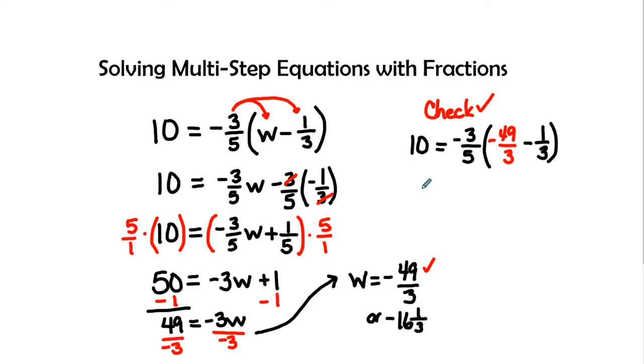So when I simplify we will have 10 equals negative three fifths. We're going to simplify inside the parentheses first. So I have a negative 49 thirds and a negative one third which gives me a negative 50.